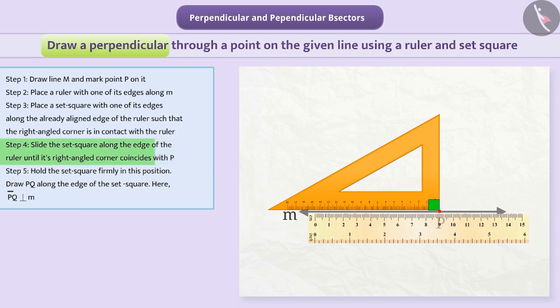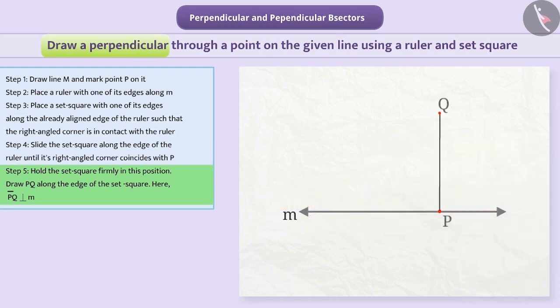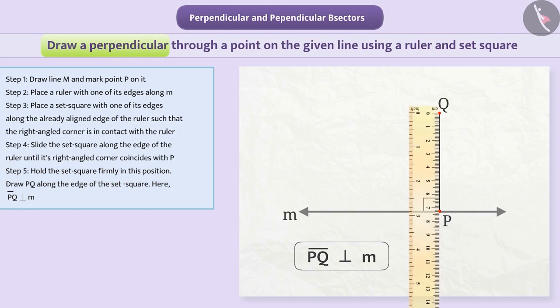Step 5: Hold the set square firmly in this position. Draw PQ along the edge of the set square. The line segment PQ is perpendicular to the line M, which we can show as this. We can extend the perpendicular with the help of a ruler.